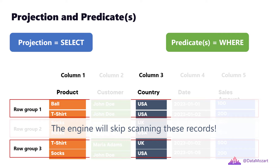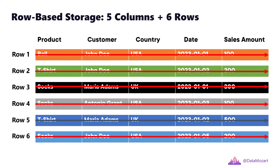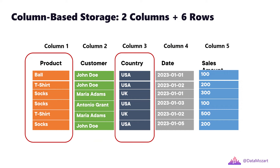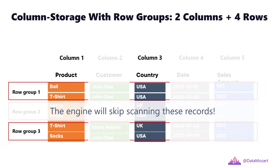Let's quickly stop here, as I want you to realize the difference between various types of storage in terms of the work that needs to be performed by the engine. Row store: the engine needs to scan all 5 columns and all 6 rows. Column store: the engine needs to scan 2 columns and all 6 rows. Column store with row groups: the engine needs to scan 2 columns and 4 rows. Obviously, this is an oversimplified example with only 6 rows and 5 columns, where you will definitely not see any difference in performance between these 3 storage options. However, in real life, when you are dealing with much larger amounts of data, the difference becomes more evident.